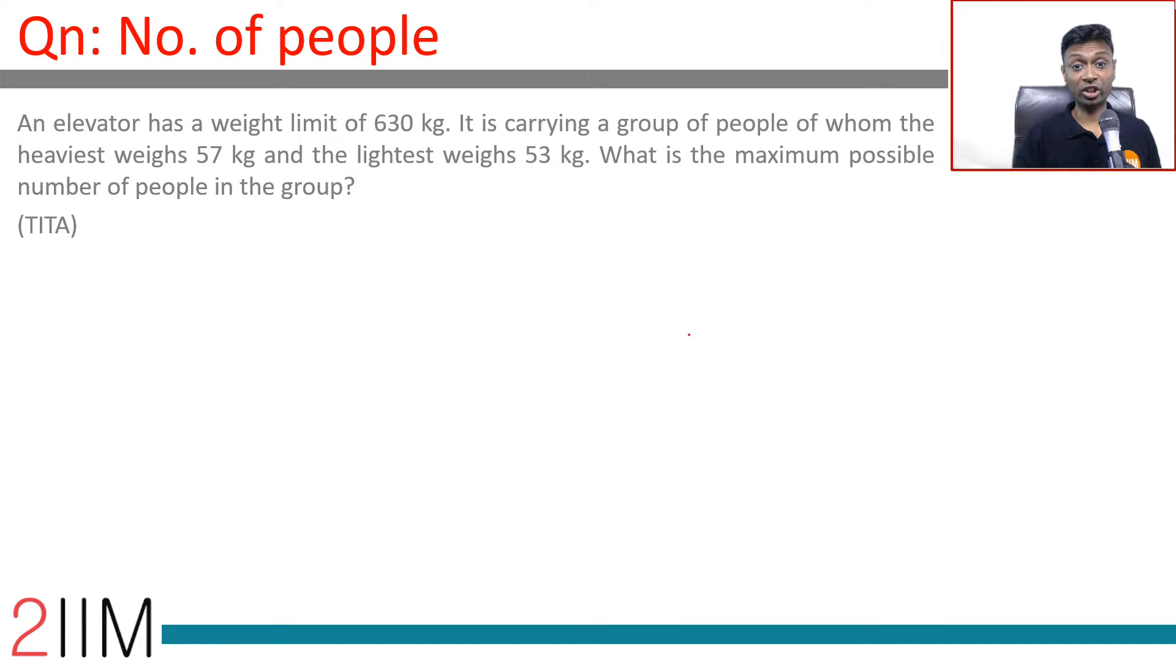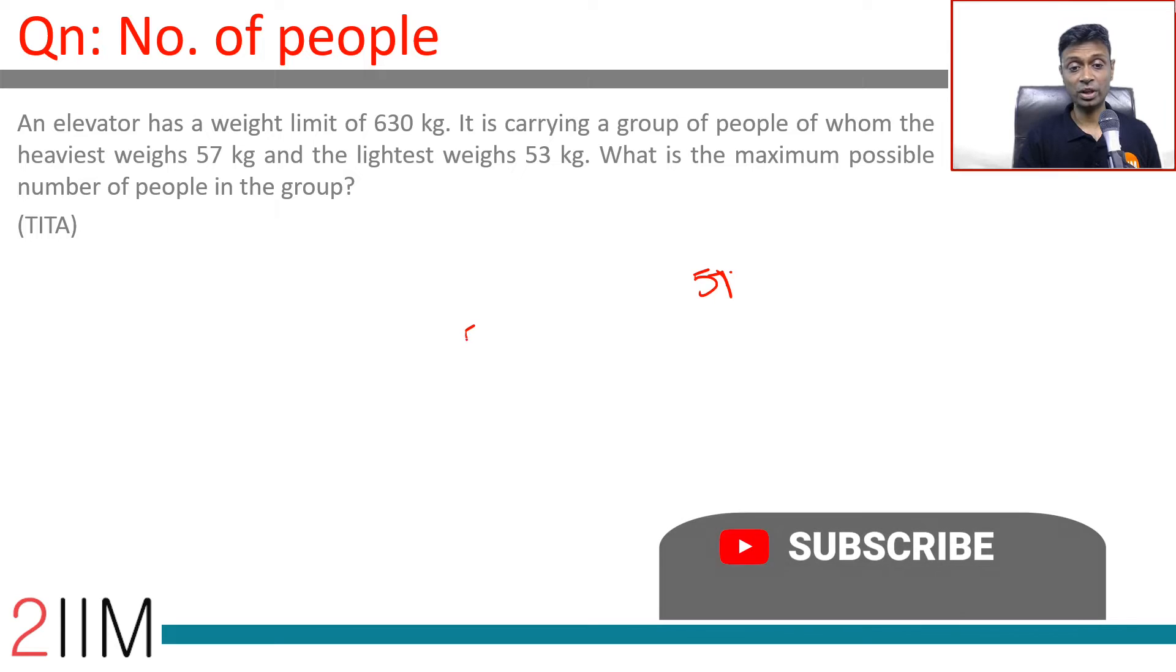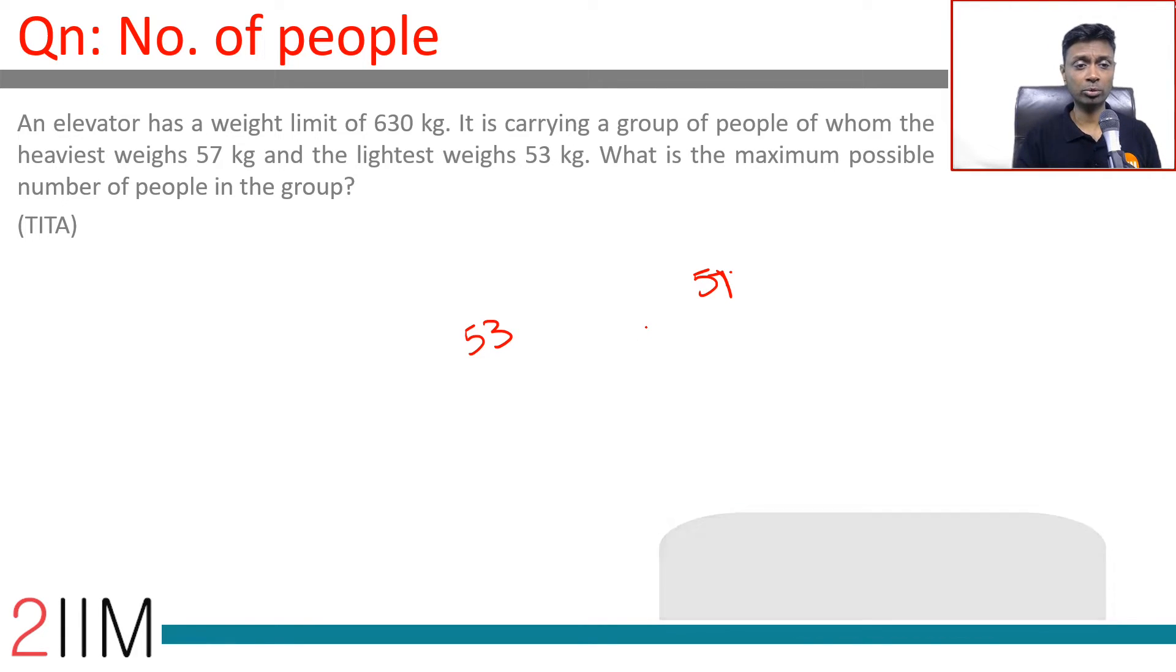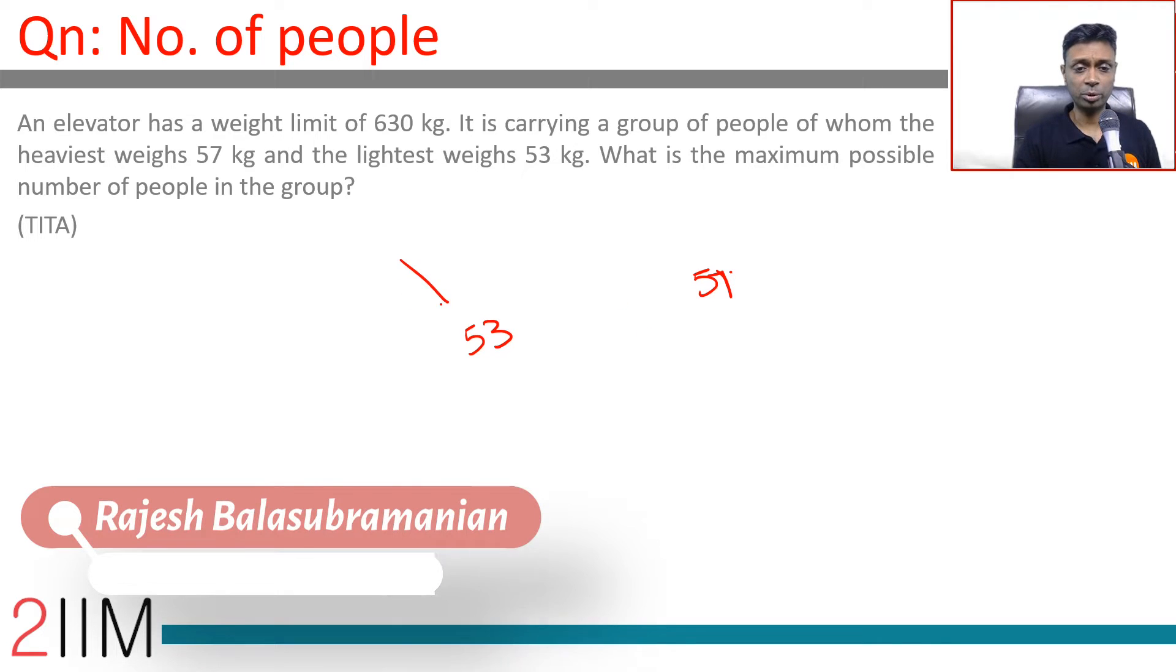An elevator has a weight limit of 630 kilograms. It's carrying a group of people of whom the heaviest weighs 57 kilograms and the lightest weighs 53. What is the maximum number of people in the group? For maximum number of people, we want the lightest weights.